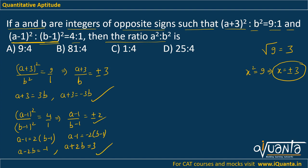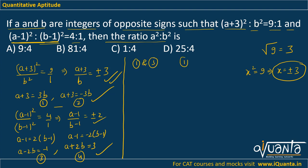So we have four equations in total. We cannot solve equations 1 and 2 together since they came from the same ratio. So we solve: (1 & 3), (1 & 4), (2 & 3), and (2 & 4). This gives four sets of values for a and b. We pick the set where a and b are integers of opposite signs.